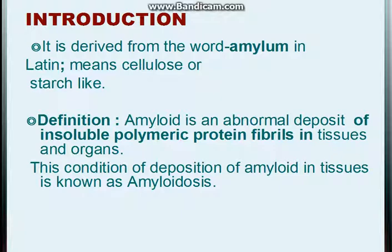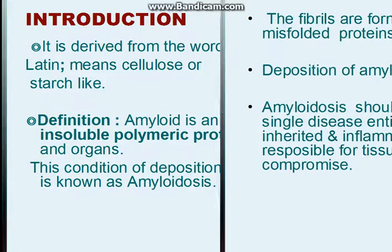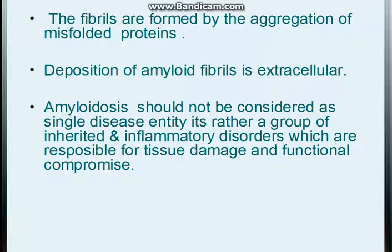Amyloid is actually an abnormal deposit of insoluble fibrils in the tissues and organs. It is not a normal protein — it is a misfolded protein fibril. When these misfolded fibrils deposit, this condition is known as amyloidosis. These fibrils are formed from the aggregation of misfolded proteins, and importantly, they deposit extracellularly — not intracellularly.